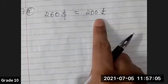According to the first part of the question, 260 can be exchanged for 200 pounds. So first we write: 260 dollars equals 200 pounds. This is the first information given.